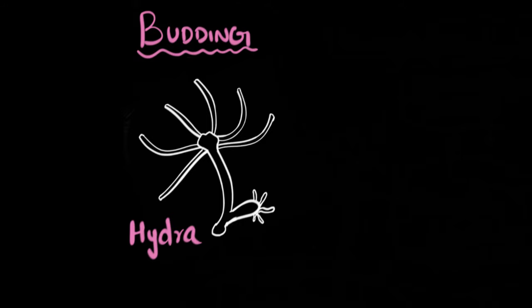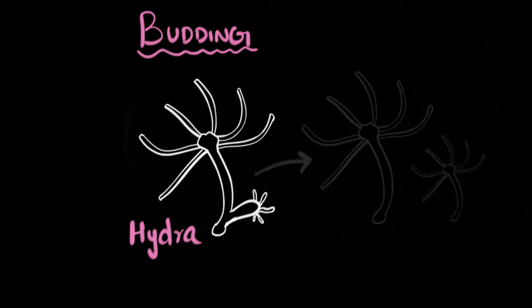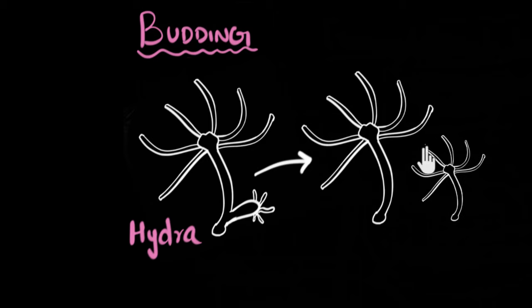Again, let me get rid of that. And then eventually, this keeps on growing and growing. And once it becomes big enough, it gets detached from the parent body. And finally, we now have a brand new Hydra. So this is how budding happens.